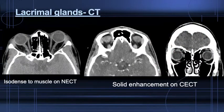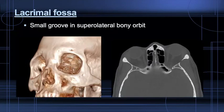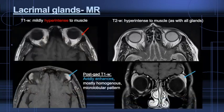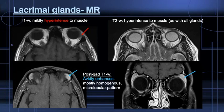On CT, the lacrimal gland is isodense to muscle without contrast, but better demarcated and avidly enhancing with contrast. Note its position in the supralateral orbit abutting the globe and conjunctiva. There's a specific groove in the bony orbit called the lacrimal fossa. On MRI, the lacrimal glands are mildly hyperintense to muscle on T1 and T2-weighted imaging. Post-contrast imaging shows avid enhancement of the glands with normal, microlobular, and mostly homogenous appearance.